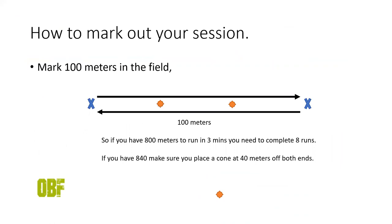So how do you mark out the session? I want you to mark 100 meters on the field. Think of it as marking to do a 1k time trial, so you have 100 meters on the field. If you're lucky enough that it works out at the exact 100 and rounds up to the nearest unit, it makes it easier, but the odds of that are quite slim.